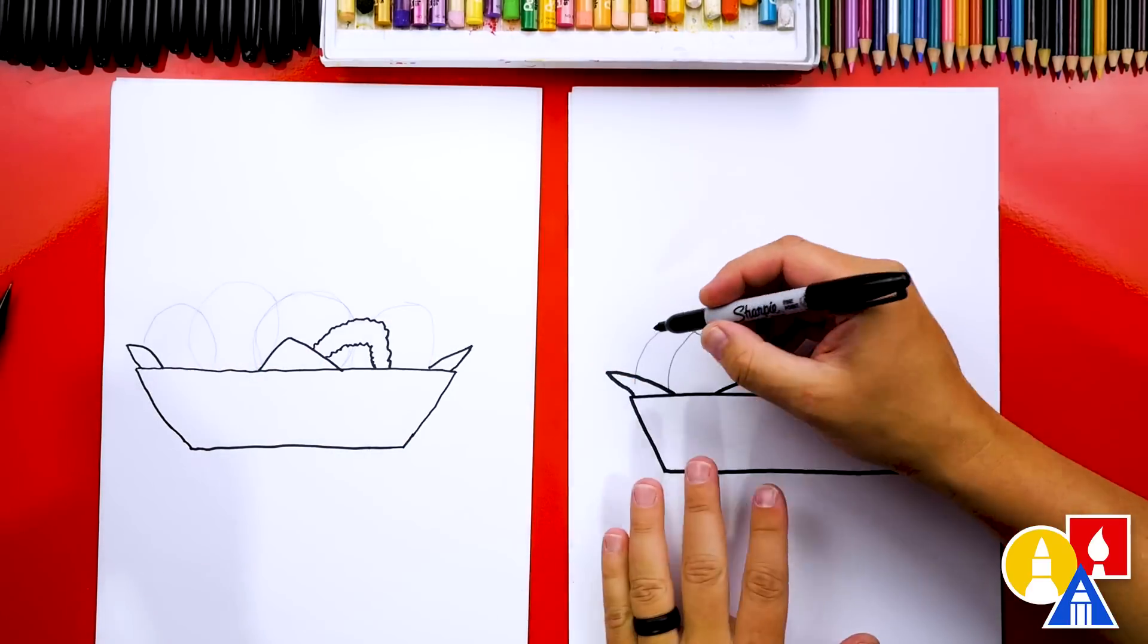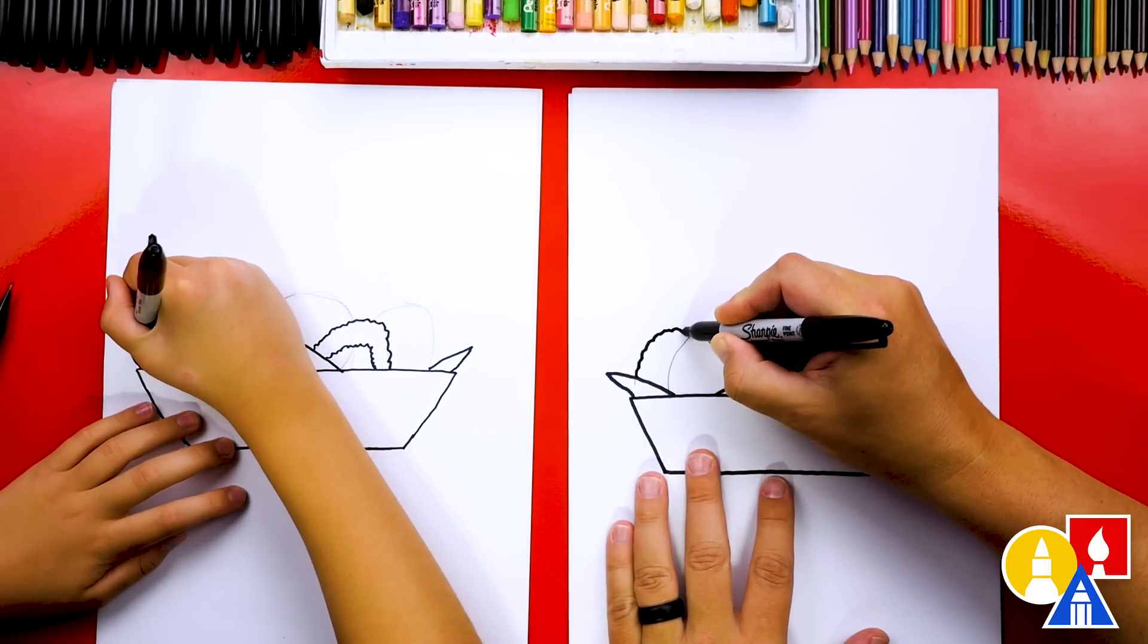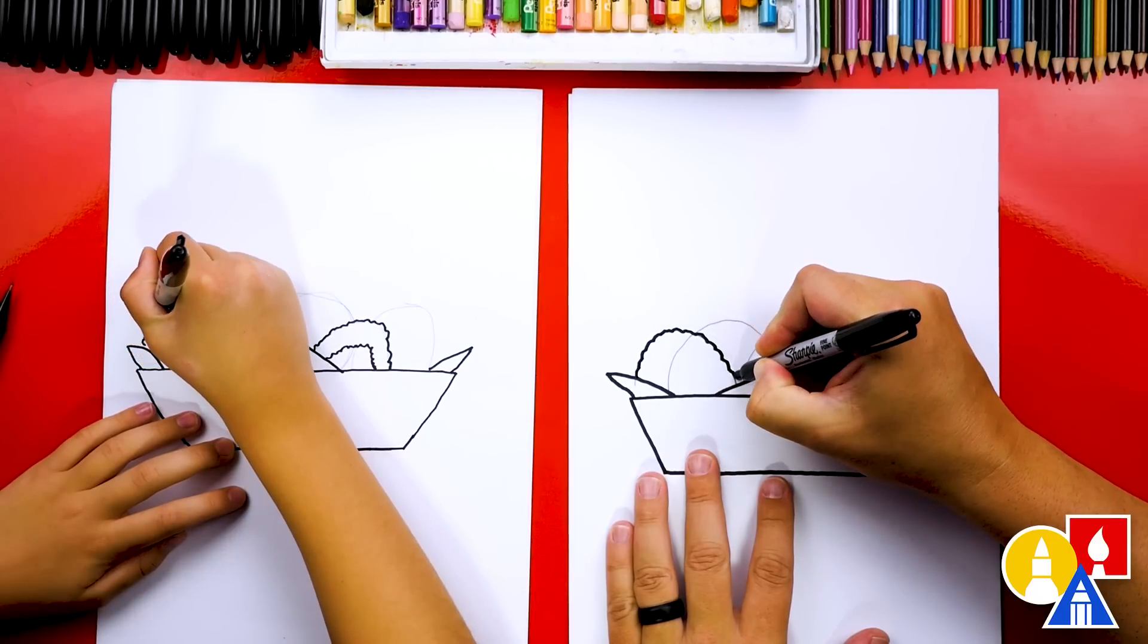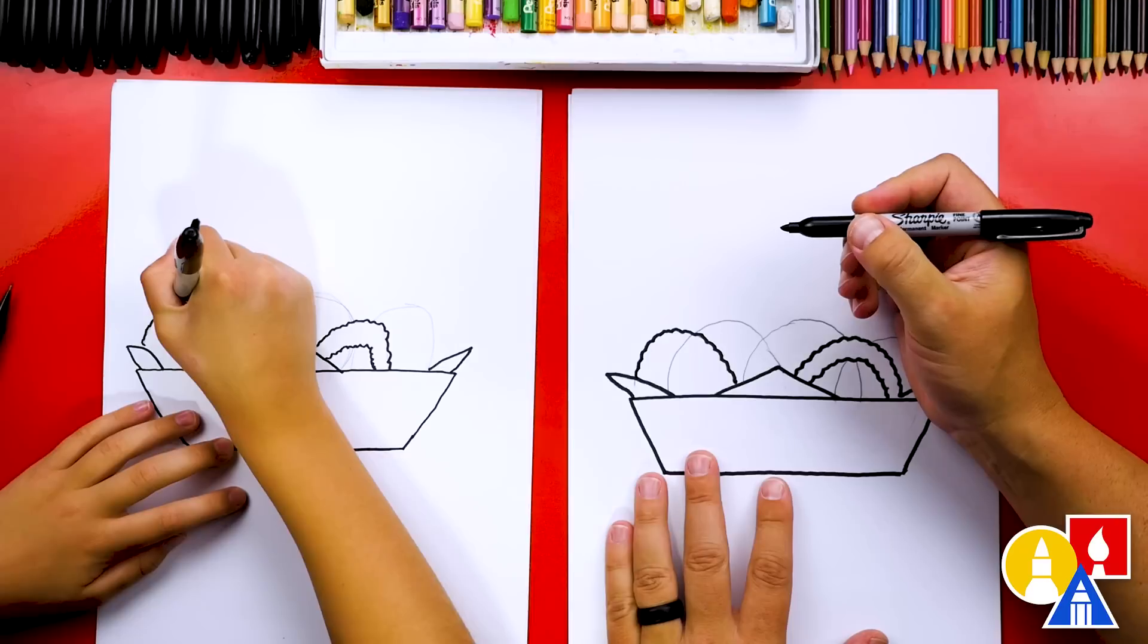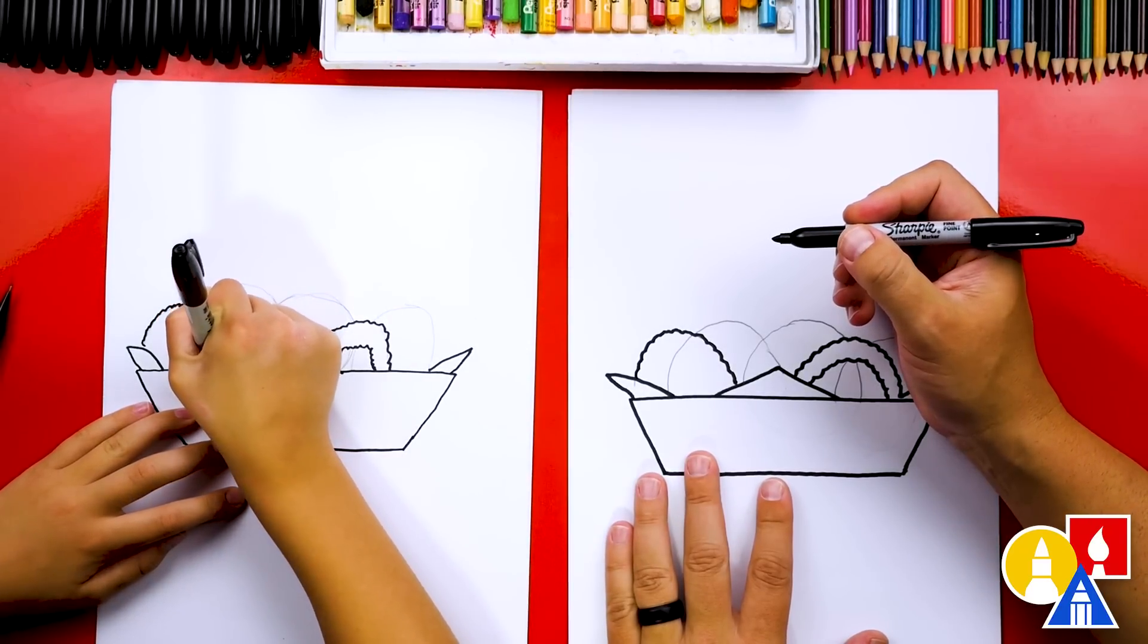And let's draw that bumpy line that's on top of the pencil line. We'll just trace over but add the texture. There you go. Keep going.